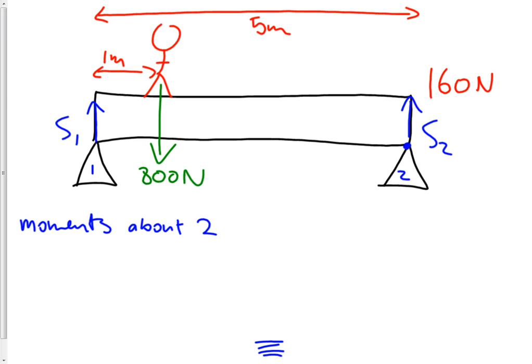Okay, now the weight of the person is causing an anti-clockwise moment. That's going to be 800 newtons times 4 meters, which would be, what would that be? 3, 2, 0, 0 newton meters. There's a clockwise moment from S1, which is going to be S1 times 5 meters. We've got the same thing again.